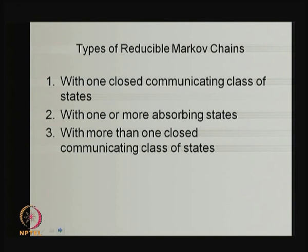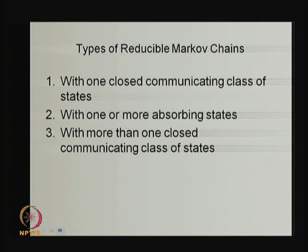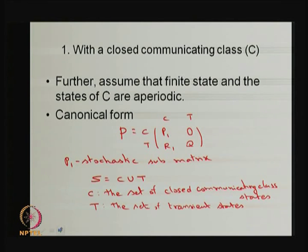Reducible Markov chains can be classified into three types: (1) a few transient states plus one closed communicating class, similar to the first example; (2) one or more absorbing states, similar to the second example; and (3) more than one closed communicating class. We will discuss the first two types in detail — the logic for studying the first type also applies to the third.